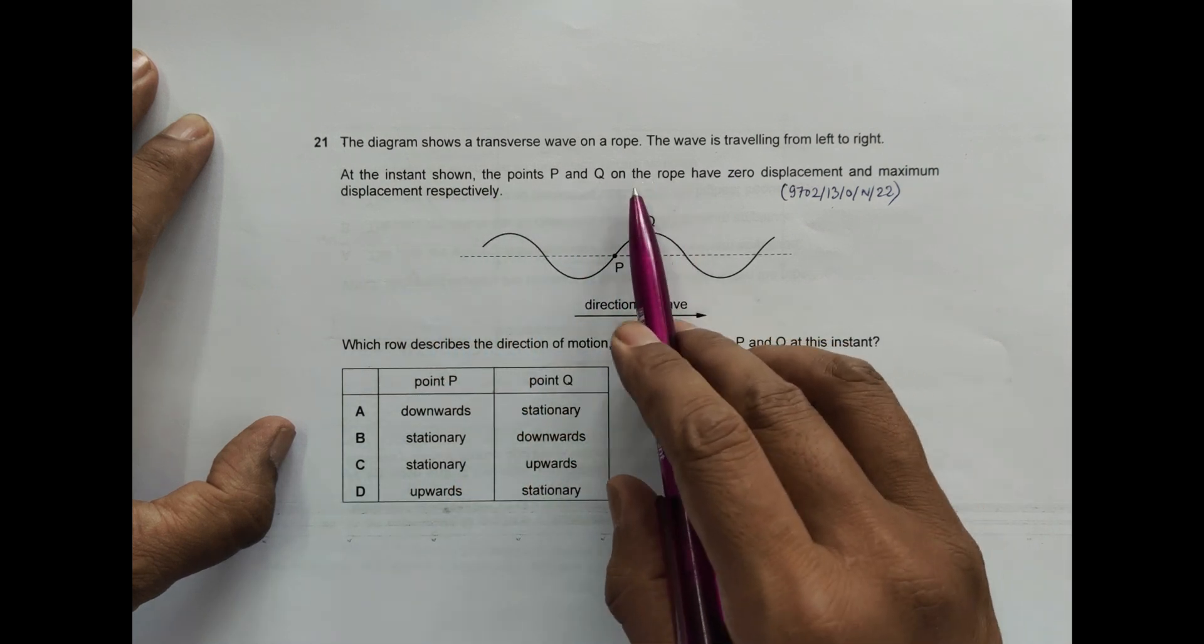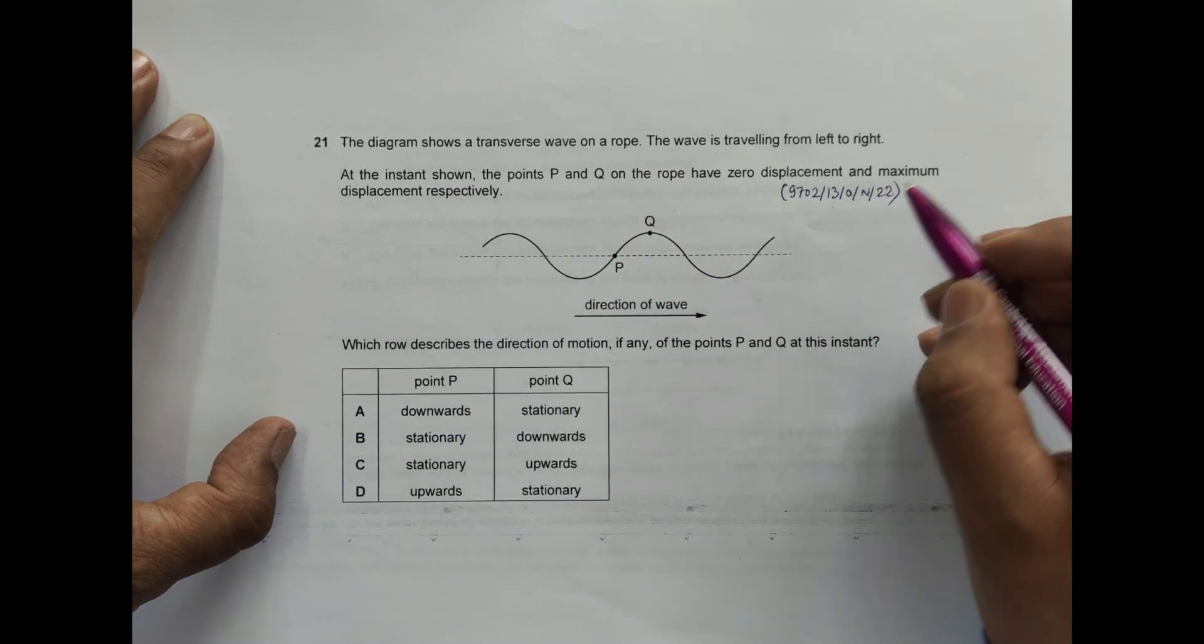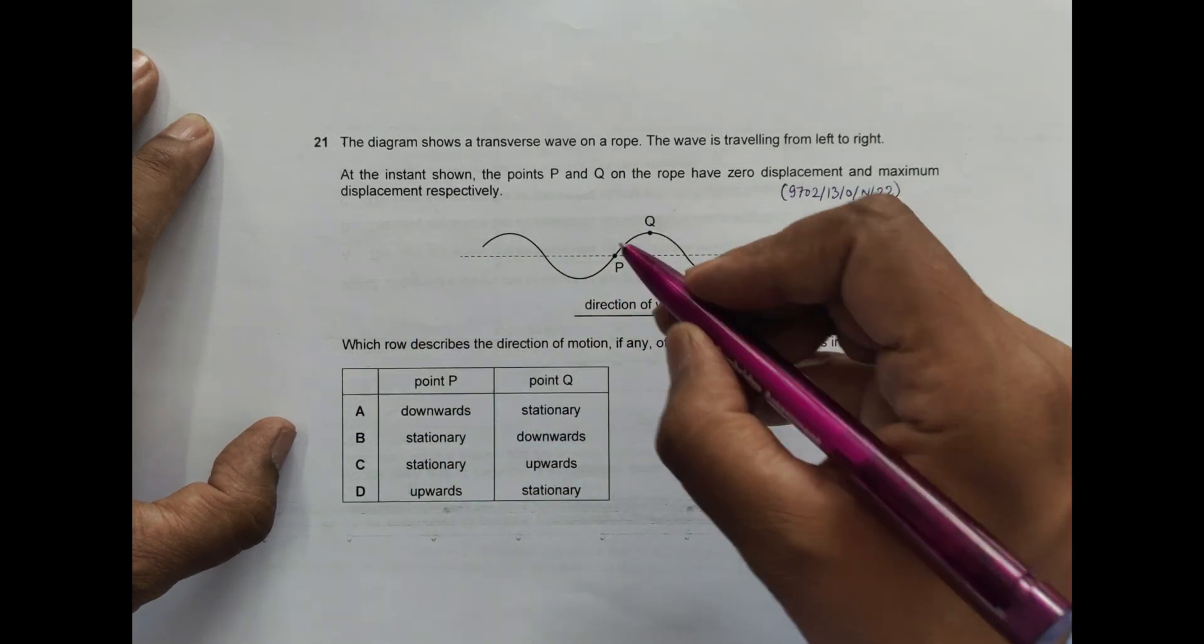At the instance shown, the points P and Q on the rope have zero displacement and a maximum displacement respectively. So this is the amplitude here, maximum displacement here.